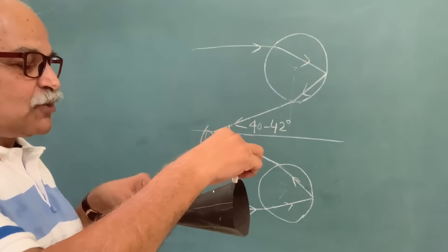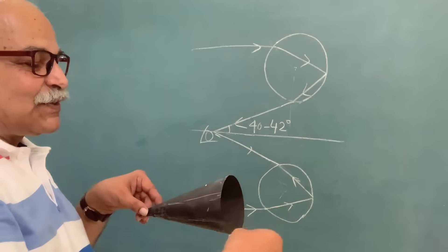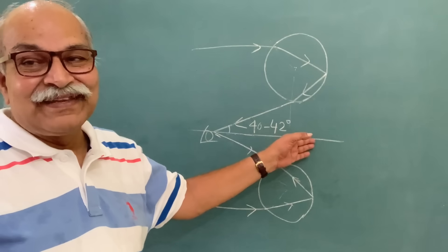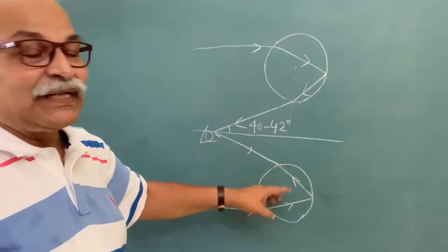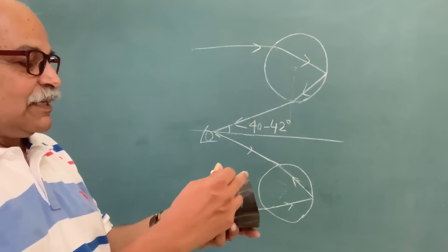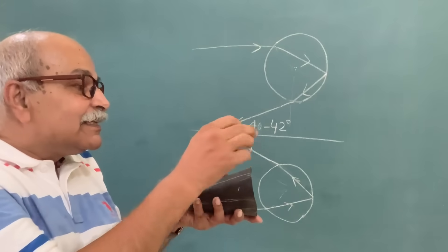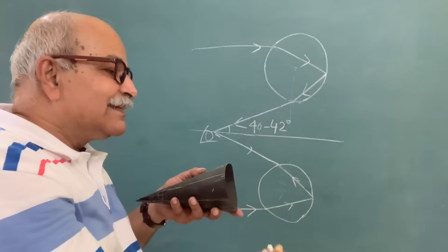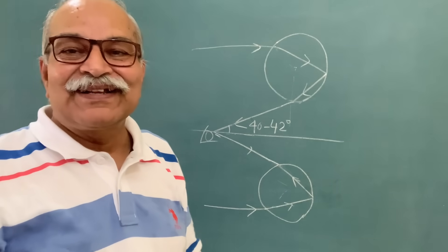So if I have a drop here, here, here, here — at any point on the surface of this cone — all of these drops are at 42 degrees from my line of sight. All these drops taken together will give me a circular view, and that is why the rainbows are circular.